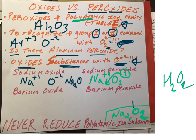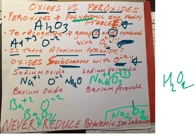Now let's do barium oxide. If you have Ba plus two for barium and you have oxide O minus two, when you crisscross you get Ba₂O₂. But these two subscripts — go ahead and reduce them, no problem, because oxide refers to monoatomic oxygen; it's not polyatomic. So your final answer is BaO for barium oxide.